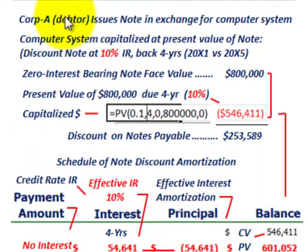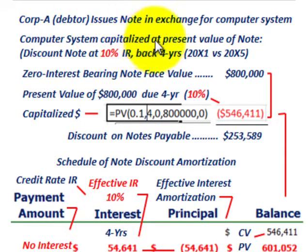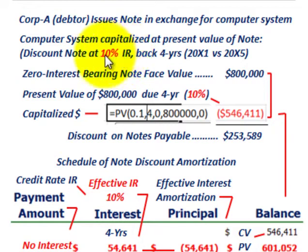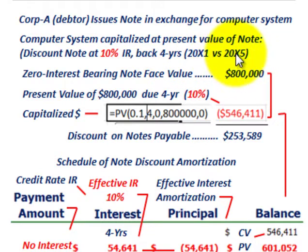We have to look at Corporation A, the debtor, who issues this note in exchange for the computer system, and determine what the computer system is actually worth. The capitalized amount for the computer system is going to be the present value of this note. We're going to discount this note back at the effective interest rate — Corporation A's borrowing rate of 10% — discounting it back four years to determine what it's worth here in 20X1. That present value becomes the capitalized amount of the computer system received in exchange for this note.